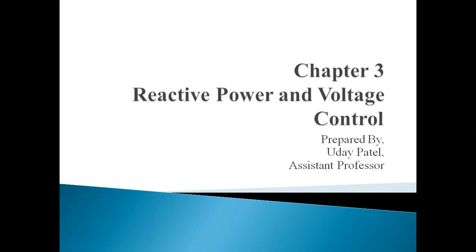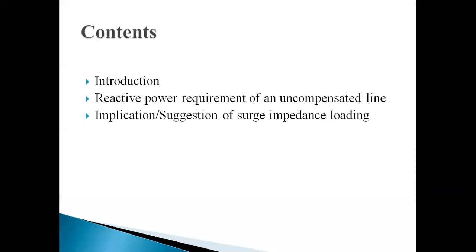We already know about this, but just for knowledge we will briefly discuss the three terminologies: active, reactive, and apparent power. In a power system, voltage control depends on whether the system is under balance condition. There are mainly two types of power: active and reactive.